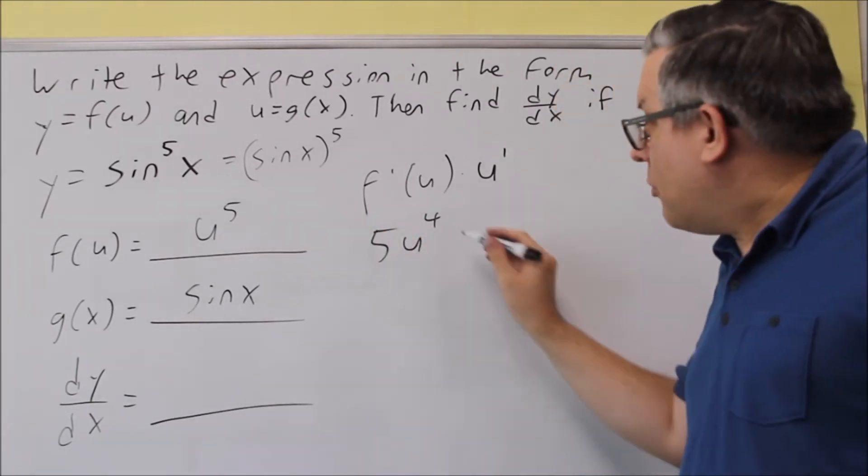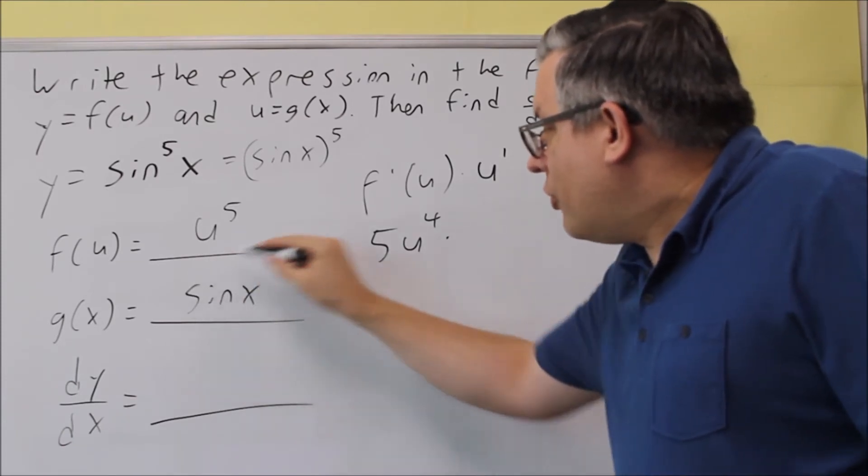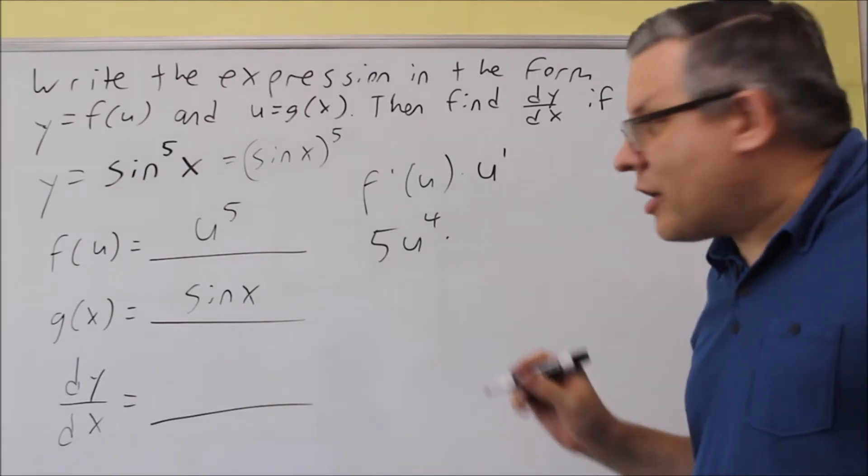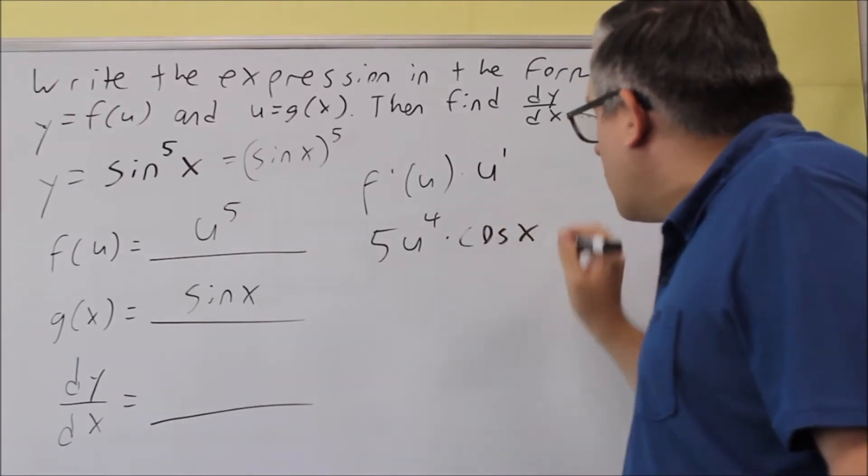Then we're going to multiply this by the derivative of our U, which is the derivative of sine X. The derivative of sine X is cosine X.